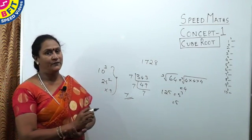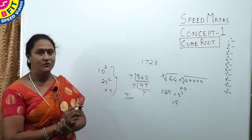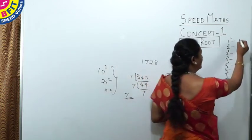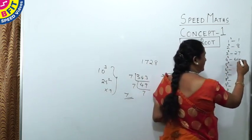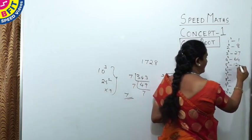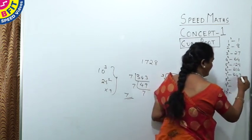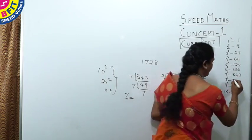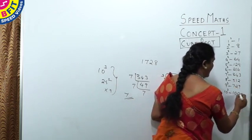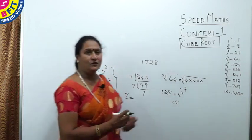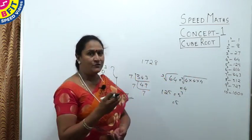Please note down the cubes of the first 10 numbers: 1³ = 1, 2³ = 8, 3³ = 27, 4³ = 64, 5³ = 125, 6³ = 216, 7³ = 343, 8³ = 512, 9³ = 729, and 10³ = 1000. We will use these to find cube roots as soon as you see the number using a pattern.